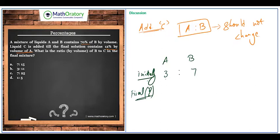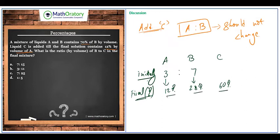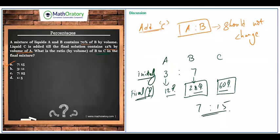In the final mixture of A, B, and C, A and B must remain in ratio 3 to 7. We know A is 12 percent, which corresponds to 3 parts. So 7 parts corresponds to 28 percent — that's B. Since A is 12 percent and B is 28 percent, totaling 40 percent, C must be 60 percent. The ratio of B to C in the final mixture is 28 to 60, which simplifies to 7 to 15.